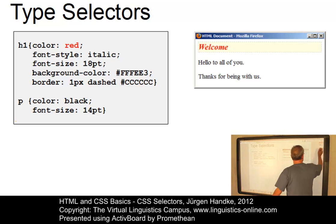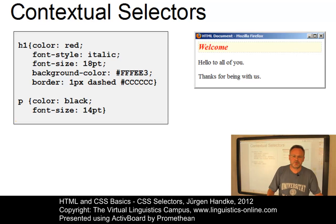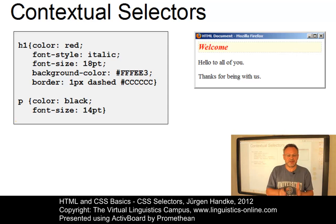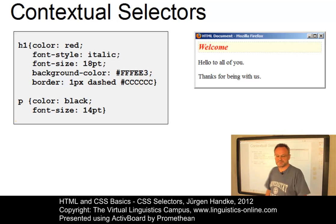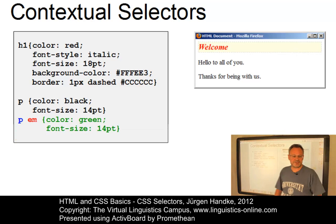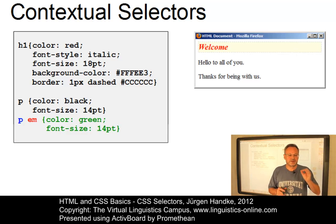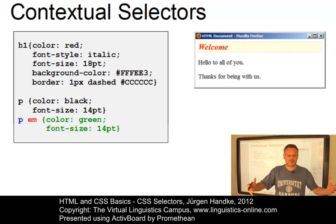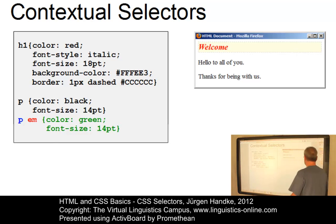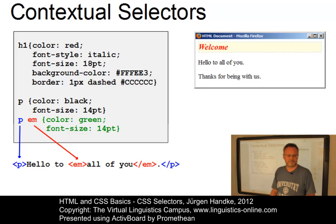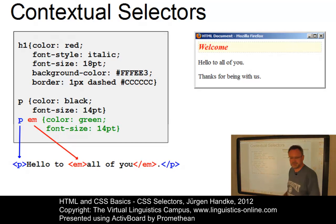Contextual selectors are contained within another selector. They are indicated in a list separated by a character space, starting with the higher level element. Here is an example: an emphasis selector applied to the paragraph tag. It assigns the color green to all emphasis tags within all paragraph tags. To see the effect, we have to change the HTML document — we inserted the emphasis tag into the paragraph tag.